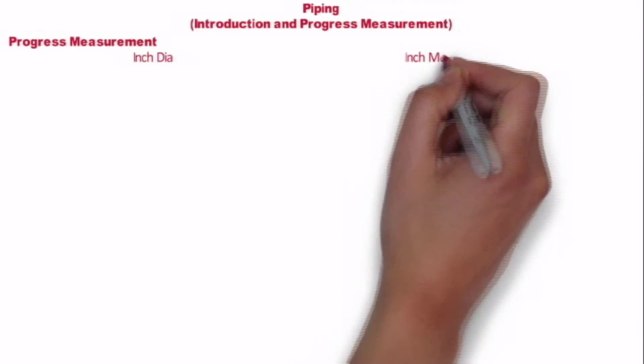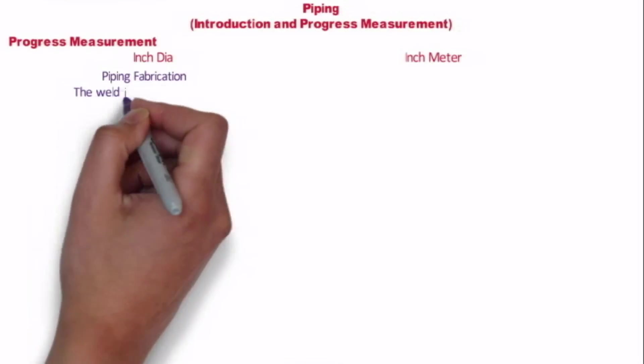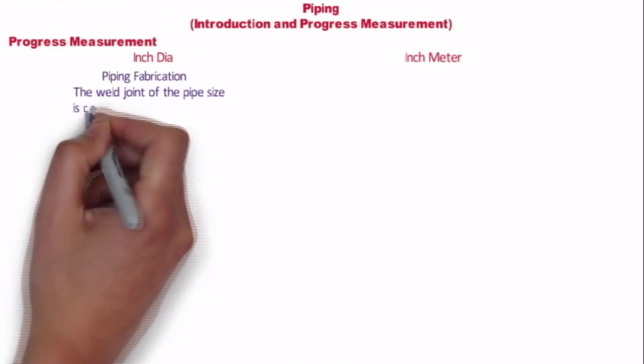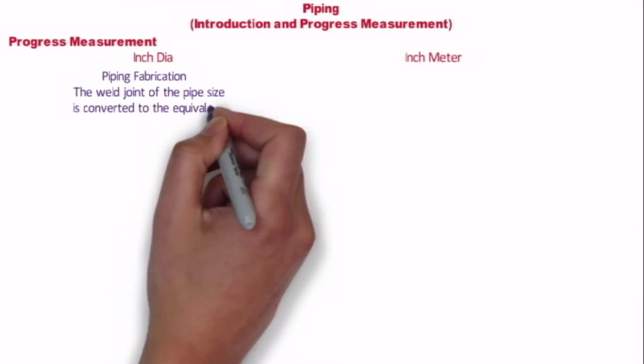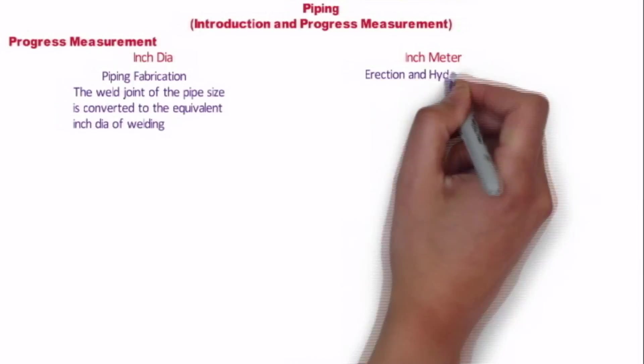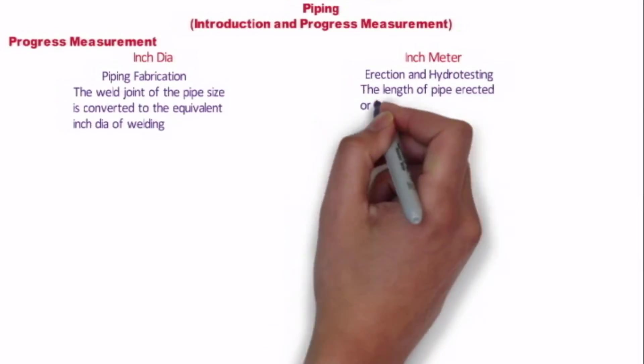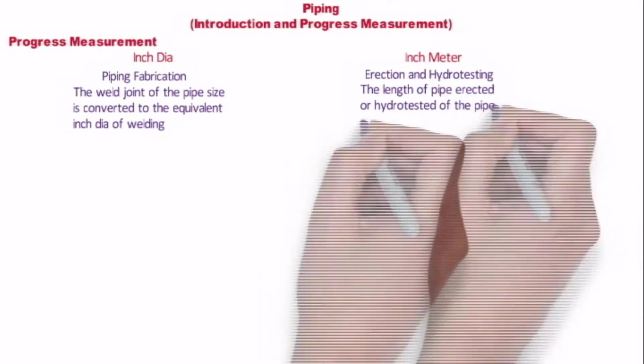Let's move to the second part of the video, that is progress management in piping. First is inch dia and the second one is inch meter. Inch dia is related to piping fabrication. The weld joint of the piping size is converted to equivalent inch dia of welding. However, inch meter is used for the erection and hydrotesting. The length of the pipe erected or hydrotested of the pipe size is converted to equivalent inch meter for erection or hydrotesting.